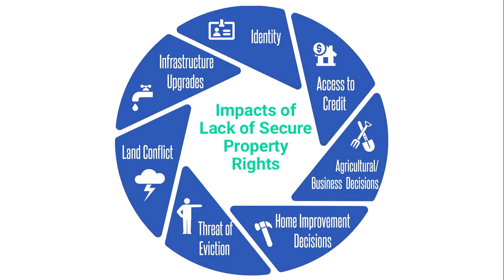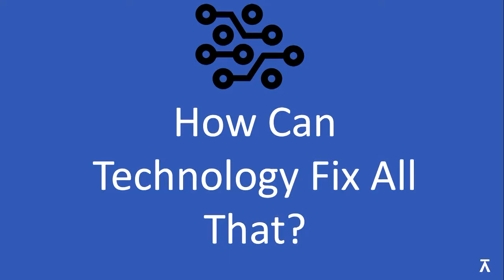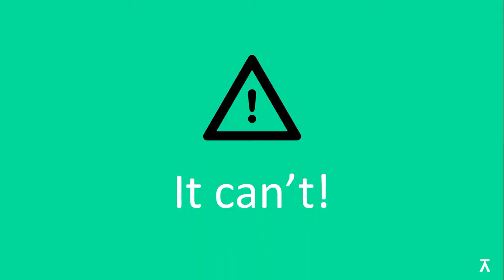All these things affect people all over the world. There's a lot of zombie statistics floating around — it's somewhere between a third and 70% of the world's population who do not have secure rights to the land that they live on. Most, if not all of us, are geeks here. So how can tech fix that? It really can't. It can help a little, anyway.